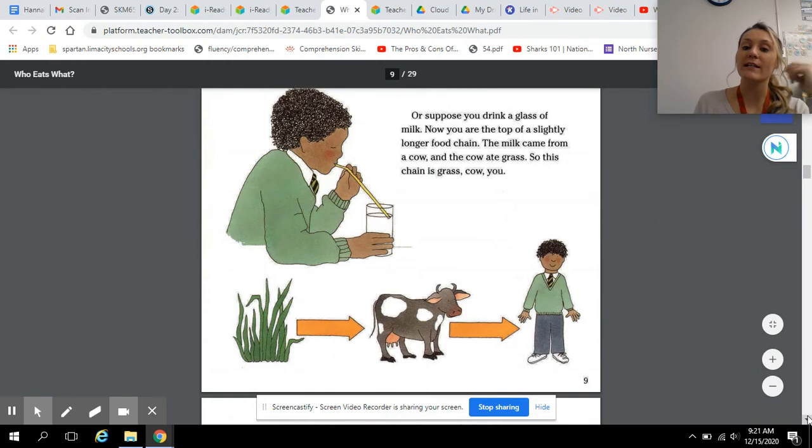Or suppose you drink a glass of milk. Now, you are at the top of a slightly longer food chain. The milk came from a cow and the cow ate grass. So, this chain is grass, cow, you.